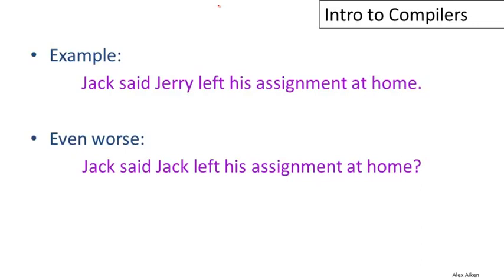As an example of the kind of thing that we do in semantic analysis, using an analogy in English, let's consider the following sentence: Jack said Jerry left his assignment at home. And the question is, who does his refer to here? It could be that his refers to Jerry, in which case we would read Jack said Jerry left Jerry's assignment at home. And without more information, we actually don't know which one his is referring to, whether it's Jack or it's Jerry.